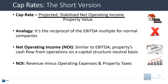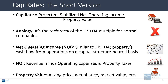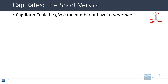At a basic level, net operating income or NOI is just revenue minus operating expenses and property taxes. The property value could be the asking price of the property, the actual price that was just paid, or the estimated market value. So you have different ways to calculate the denominator, but the numerator is usually more of a known quantity. The cap rate could be given as an assumption, or it could be up to you to make that assumption based on data they provide.